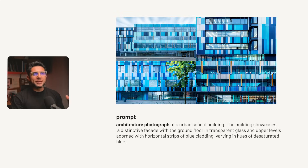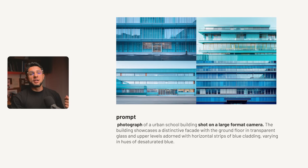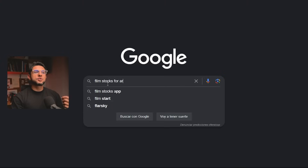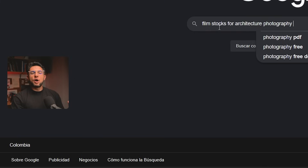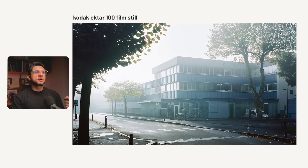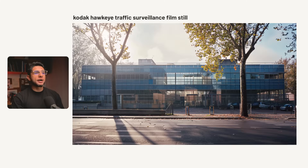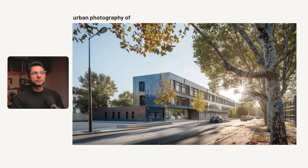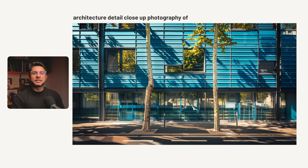When you change the medium in your prompt, the whole image changes. If you're going for a realistic camera feel, you might want to use cameras that architects typically use. Some favorites are 'photograph of, shot on a large format camera' or 'shot on a Nikon D700 camera'. For a realistic but vintage feel, you can use film stocks like Kodak Ektar 100, Kodak Hawkeye traffic surveillance film, or Kodak Portra 400. Other useful medium words include landscape photography, urban photography, aerial photography, and architectural detail photography.